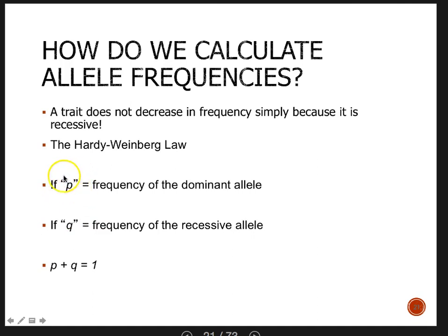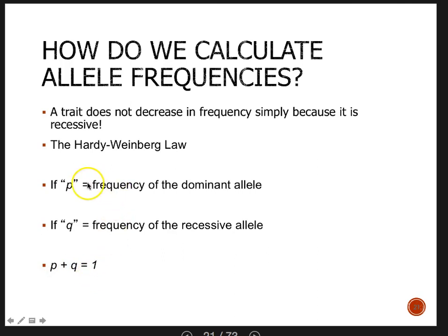Our first mathematical term is lowercase p, defined as the frequency of the dominant allele. Frequency is simply how many of a subset divided by the total. So if p is the frequency of the dominant allele, we figure out how many dominant alleles there are and divide by the total number of alleles. Lowercase q is the opposite — it's the frequency of the recessive allele. If we only have two alleles in the population, then p + q = 1, because adding the two frequencies together equals the total.